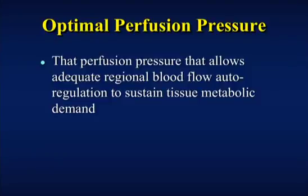Every organ is as communistic as you can be — it takes only what it needs, nothing more. So if it needs more oxygen because its metabolic demand goes up, it dilates, decreasing its resistance, and it gets flow. But if it doesn't need the oxygen, it stays vasoconstricted. And even if you have a high arterial pressure, it won't increase the flow to that region. We refer to this as autoregulation.